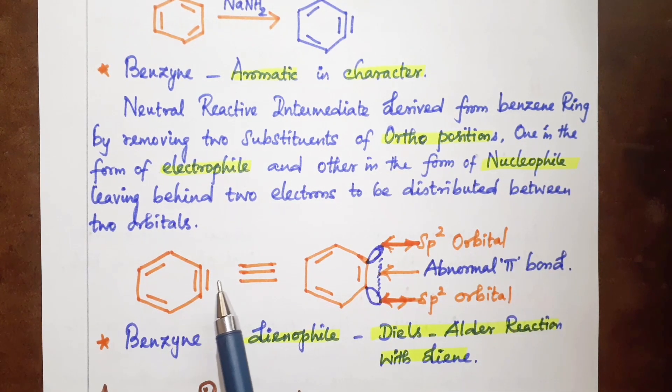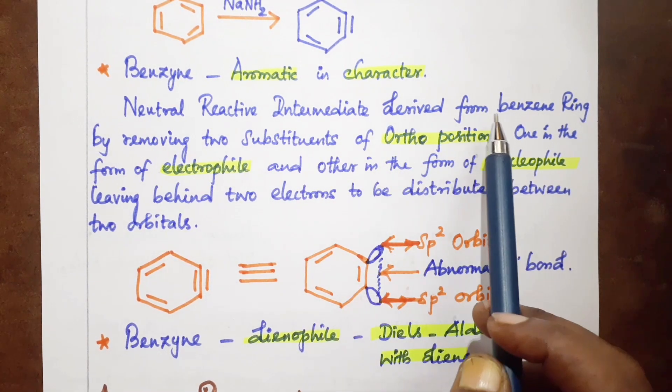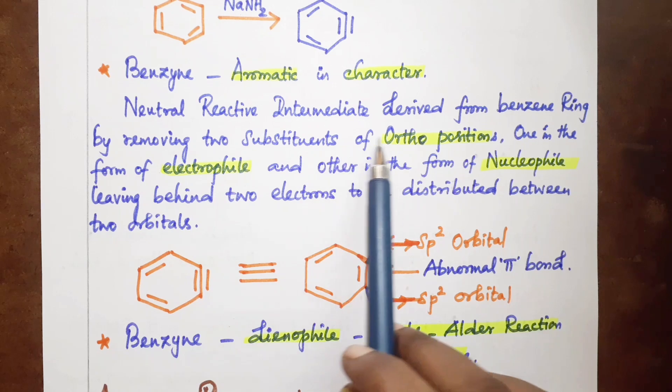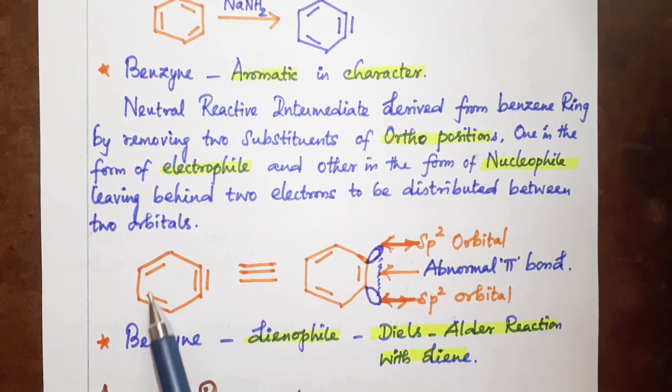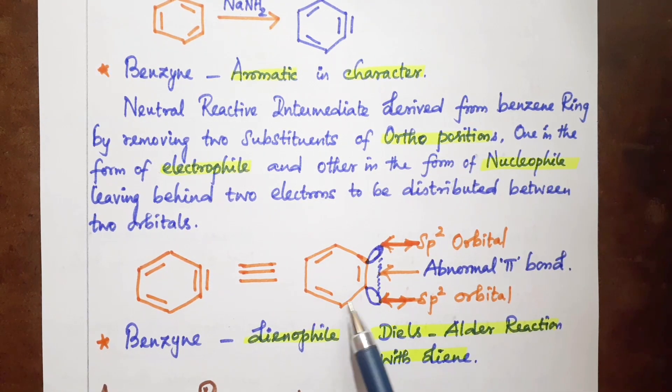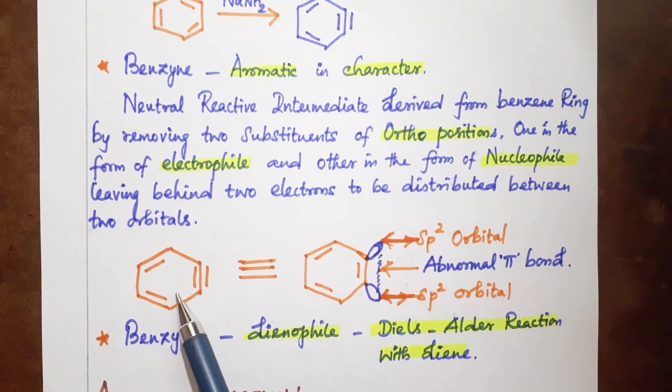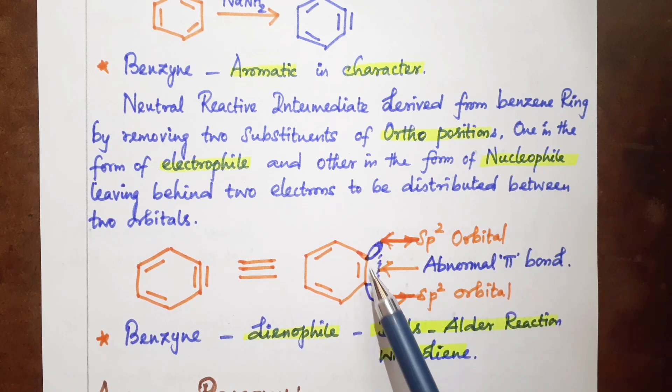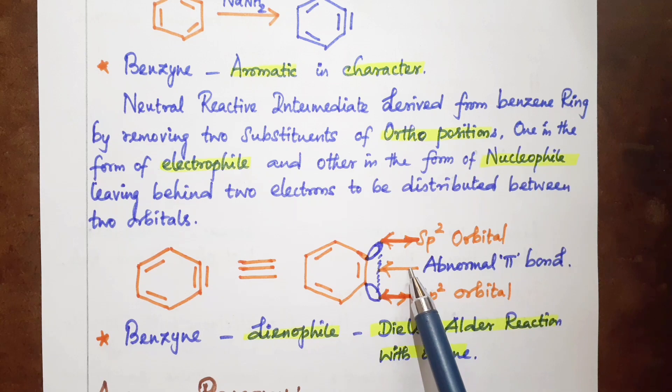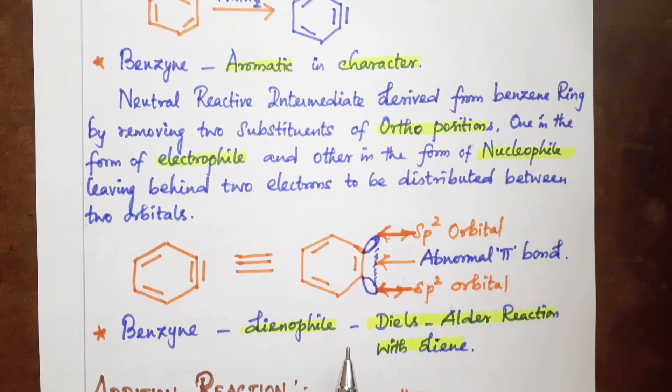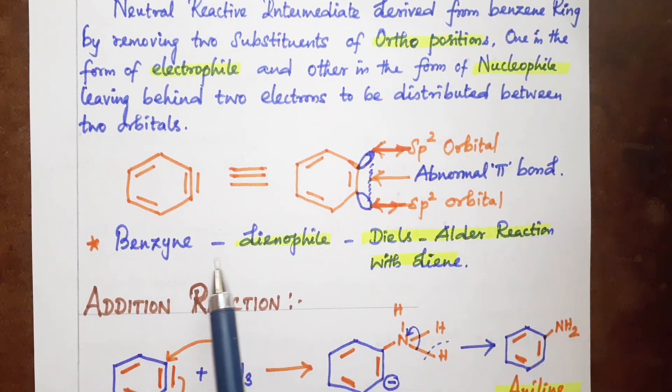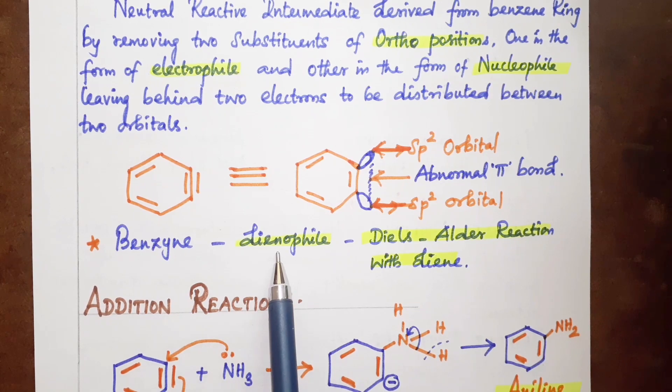Benzyne is derived from the benzene ring by removing two substituents - one in the form of an electrophile and another in the form of a nucleophile, leaving behind two electrons to be distributed between the orbitals in the form of sp2 orbital, forming a subnormal pi bond.